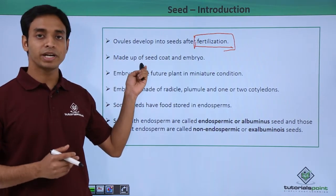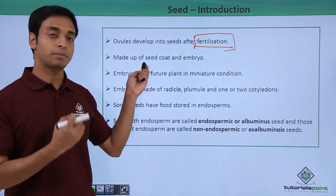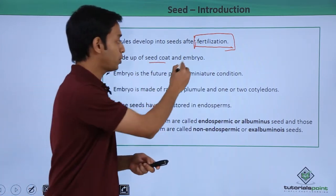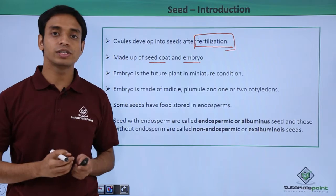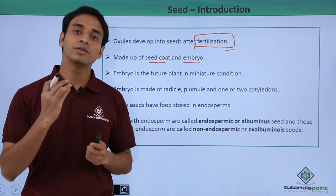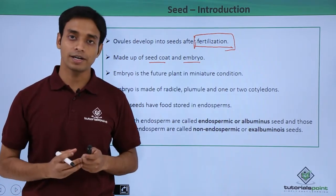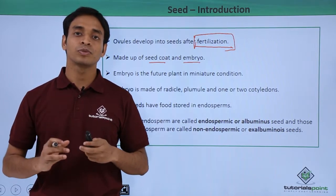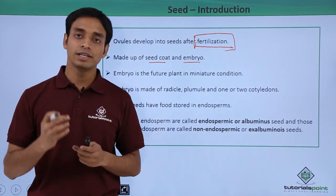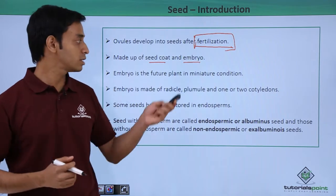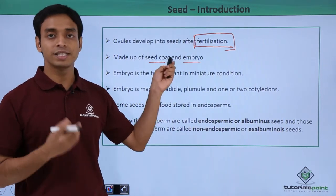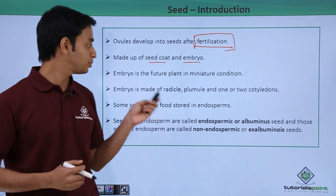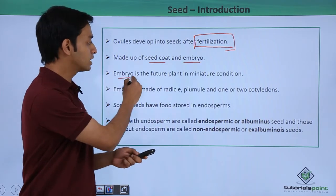Seeds are made up of two most important parts: the seed coat and the embryo. The embryo is the miniature form of the future plant — a reduced structure of a larger plant that it will eventually become. This miniature form is present inside the seed coat. So the embryo represents the future plant in miniature condition.